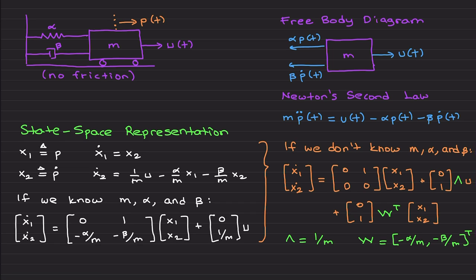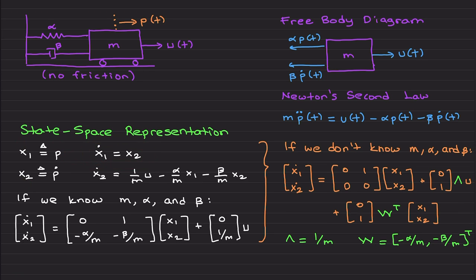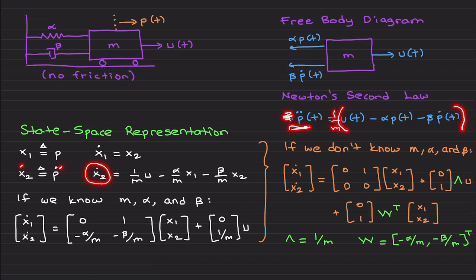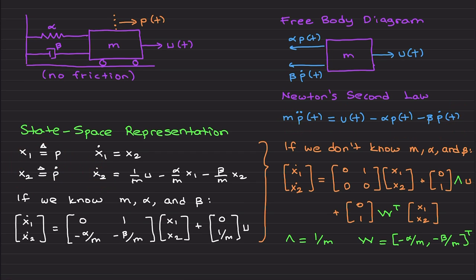To represent this system in state space, let X1 = P and X2 = P-dot. Then X1-dot = P-dot = X2. X2-dot is P-double-dot, which comes from Newton's law — move M to the right-hand side as 1/M, and replace P with X1 and P-dot with X2. This gives you the full state-space equations.